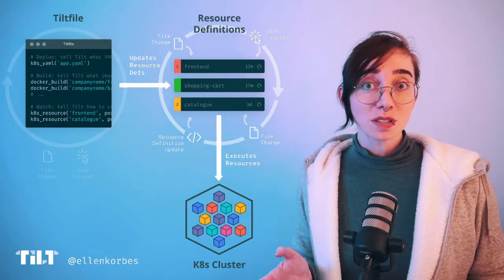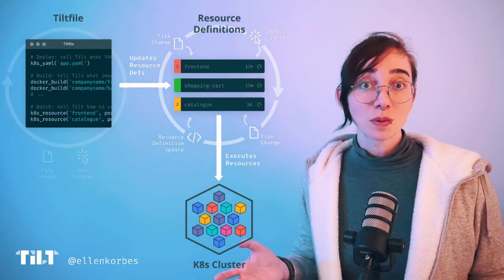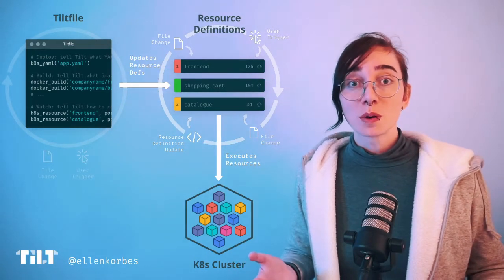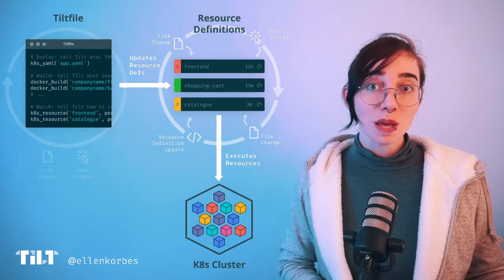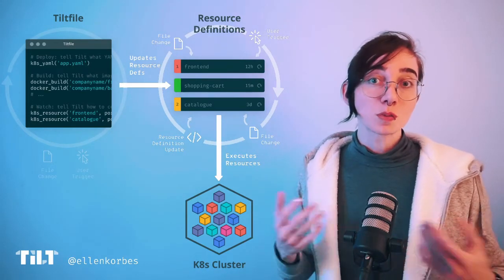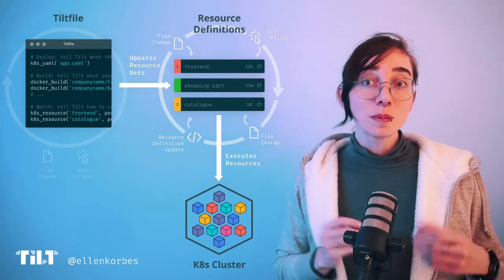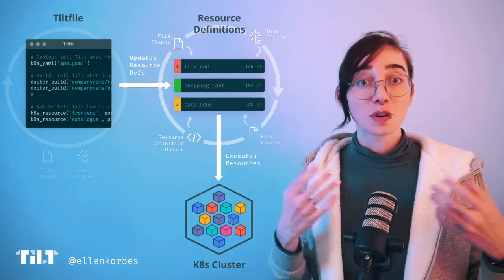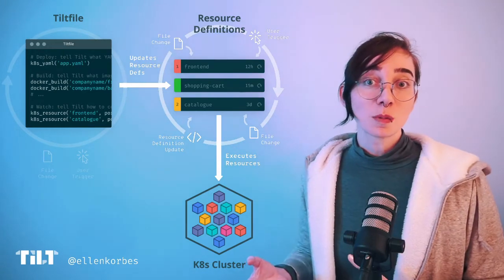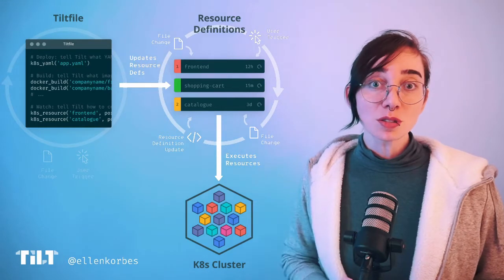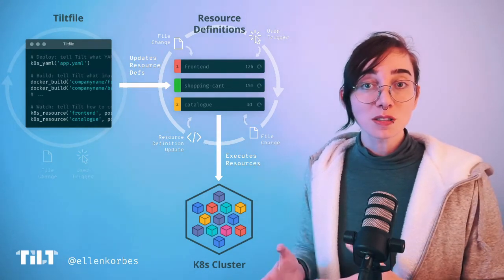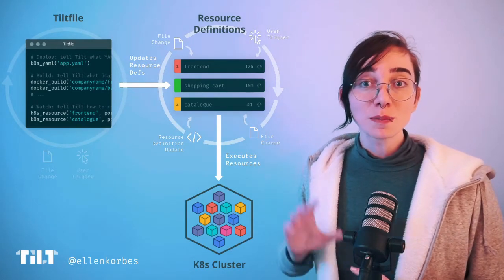Now let's talk about how and when Tilt executes those resources. The how depends on what the resource is. If it's a local command, we just run it locally. If there are image build instructions present, we build the image; and if there's Kubernetes YAML present, we deploy it to the cluster. As a note, Tilt can also modify a running container in place for faster updates — look into live update for that — but that's a separate discussion.